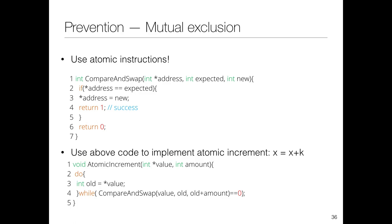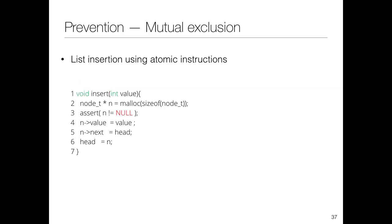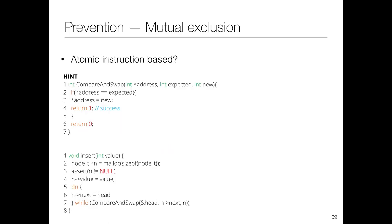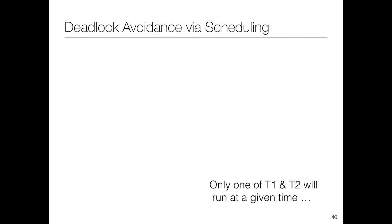Work through the example with different values to understand it fully. You can similarly implement lock-free list insertion using atomic compare-and-swap—the race condition occurs in the head-update lines, and you use CAS on the head pointer. Deadlocks can also be avoided using scheduling, but we'll cover that tomorrow.